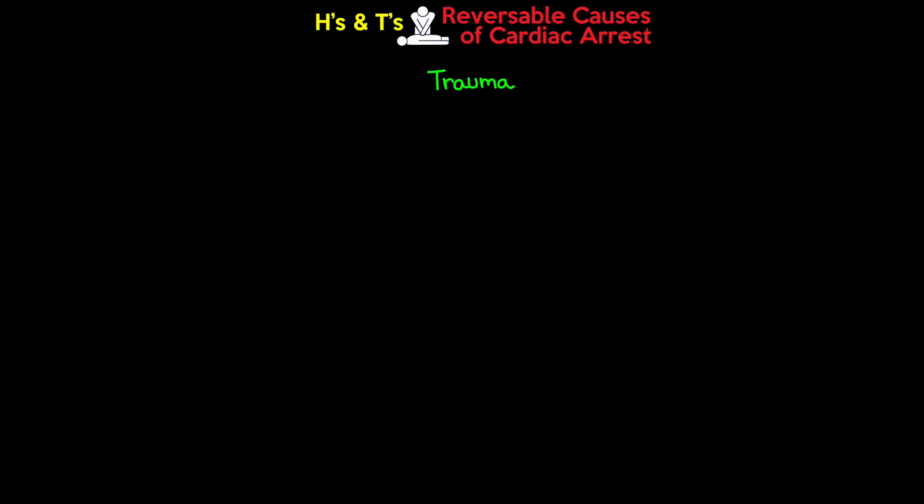Finally, the last T is trauma. In the ICU, trauma typically isn't going to be the primary cause of cardiac arrest — anything relevant would already be identified through primary and secondary surveys in the ED or trauma bay. That covers all 11 H's and T's. Dedicate the time and energy to memorizing these so you can recall them quickly in the middle of a stressful code situation.